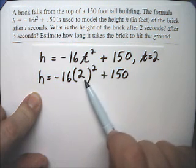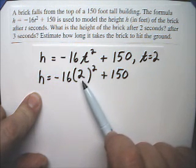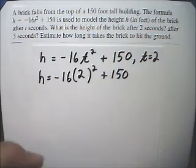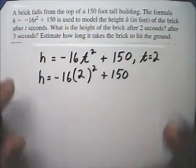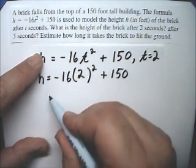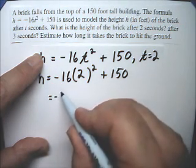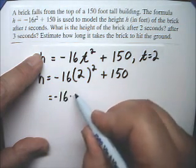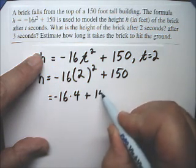So I have to do exponents first. That's according to the please excuse my dear Aunt Sally rules. And 2 to the second power is 4. So I get minus 16 times 4 plus 150.